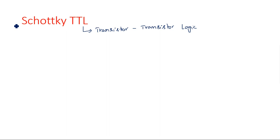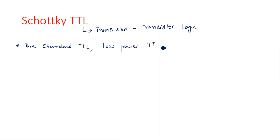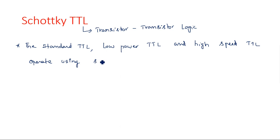The standard TTL, low power TTL, and high speed TTL all operate using saturated switching — that means when a transistor is in off state it is completely in cutoff region, and when a transistor is in on state it is completely operated in saturation region. So we operate the transistor either in cutoff region or deep saturation region.